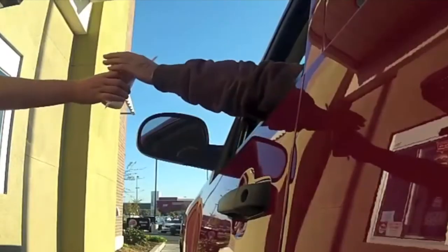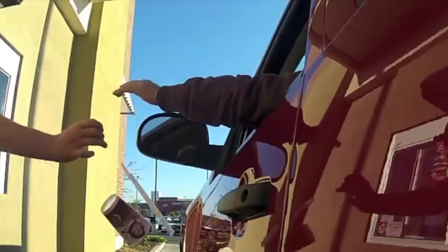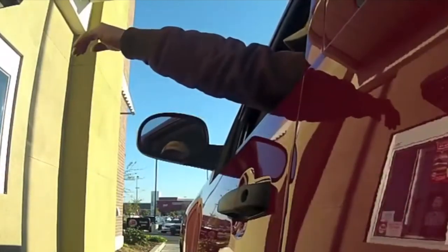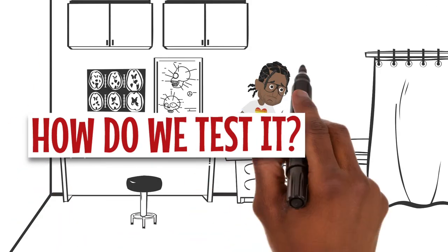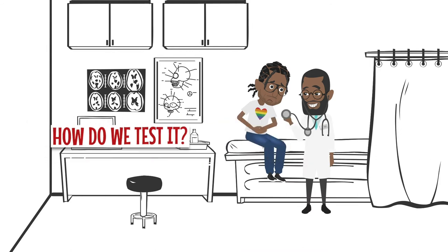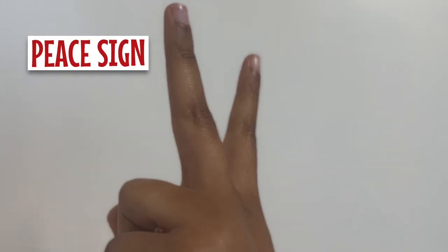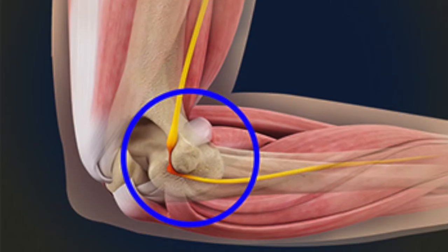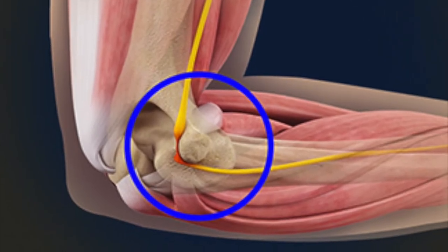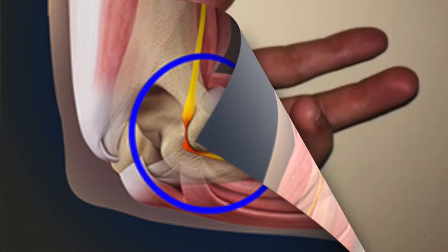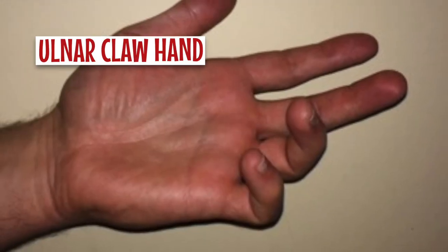Ulnar nerve entrapment is a painful condition that affects your ability to grasp items. How do we test it? Ask the patient to make a peace sign. Ulnar nerve entrapment can happen either at the wrist or the elbow, giving the patient an ulnar claw hand.